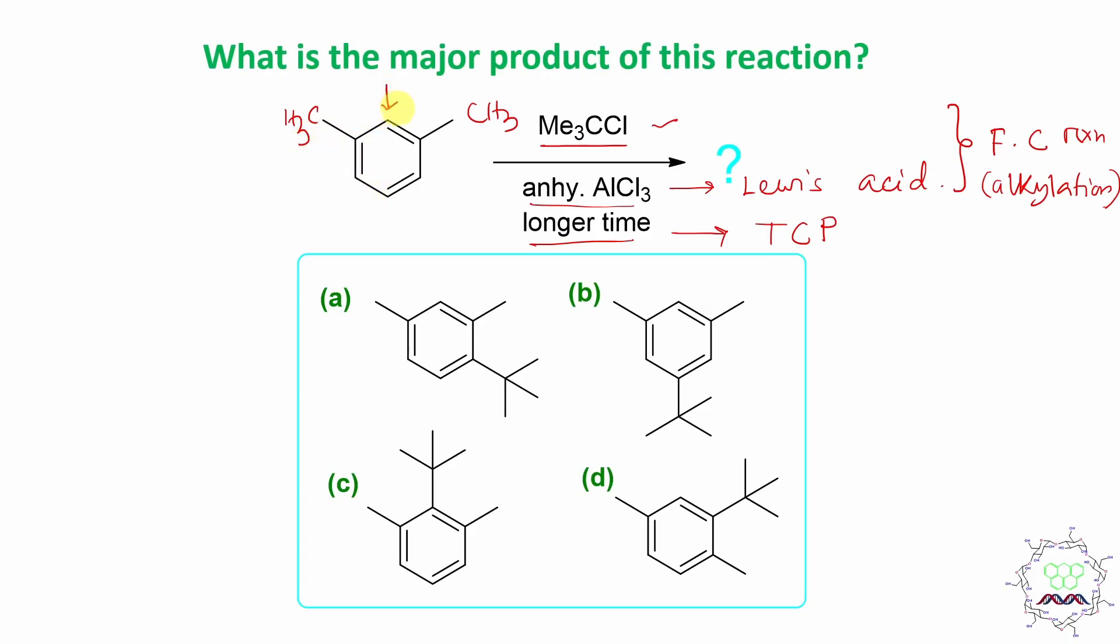This position, this position, and this position will be electron-rich. Because this is ortho with respect to this and para with respect to this methyl, this position is ortho with respect to both of these methyls. Similarly, the same thing is true for this. Now, the question is how the reaction will happen. So let's go to the main topic now.